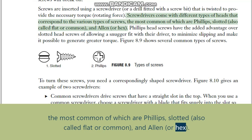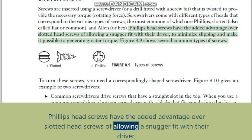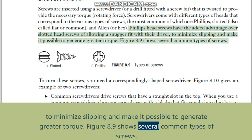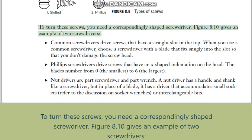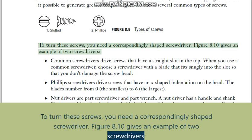Screwdrivers come with different types of heads that correspond to the various types of screws. The most common are Phillips, slotted (also called flat or common), and Allen or hex. Phillips head screws have the added advantage over slotted head screws of allowing a snugger fit with their driver to minimize slipping and make it possible to generate greater torque. Figure 8.9 shows several common types of screws.